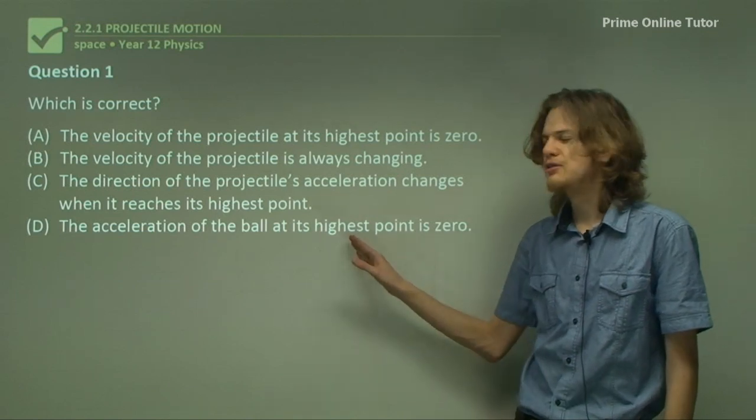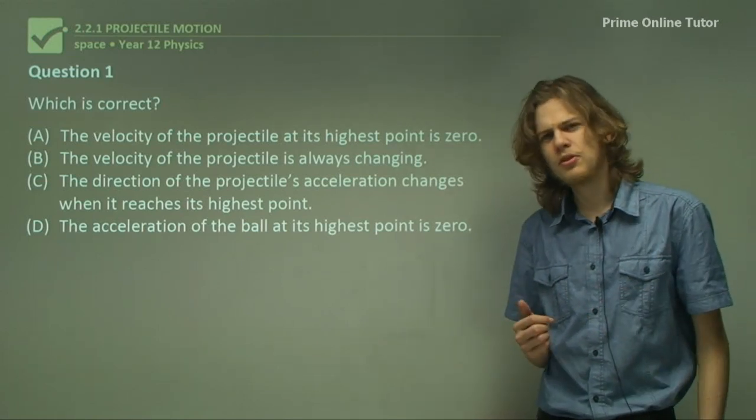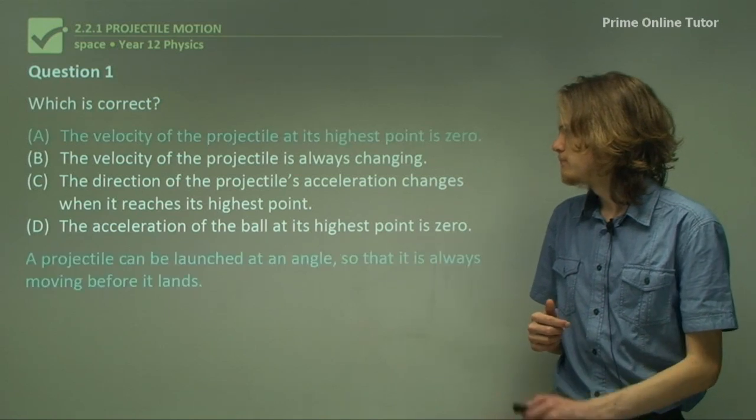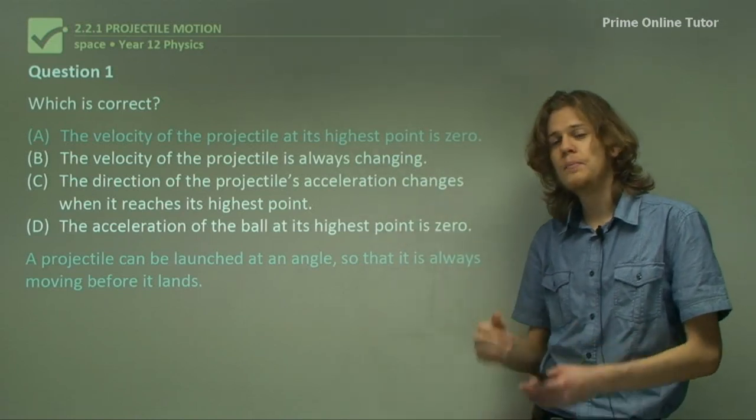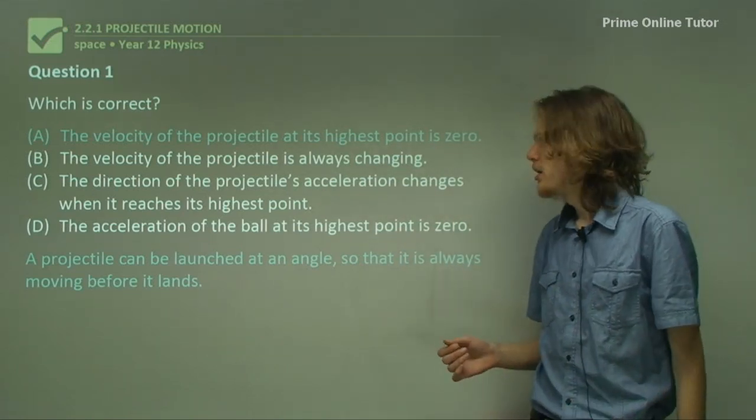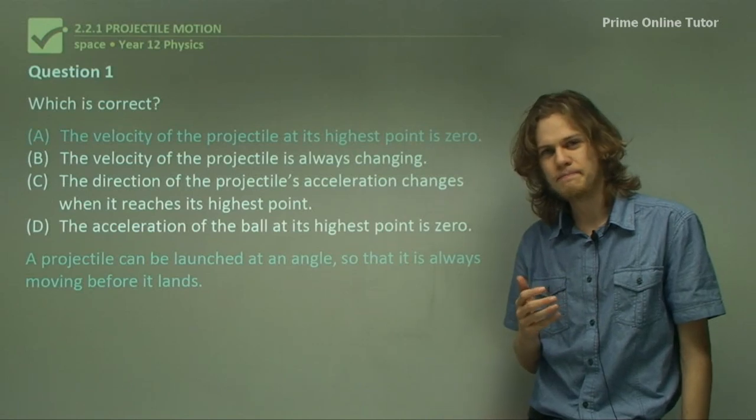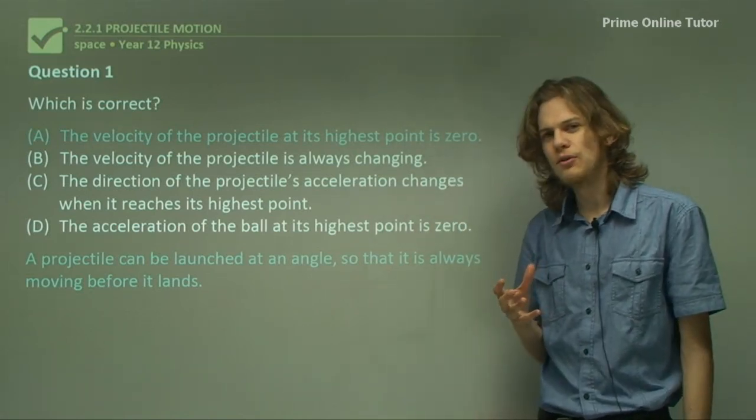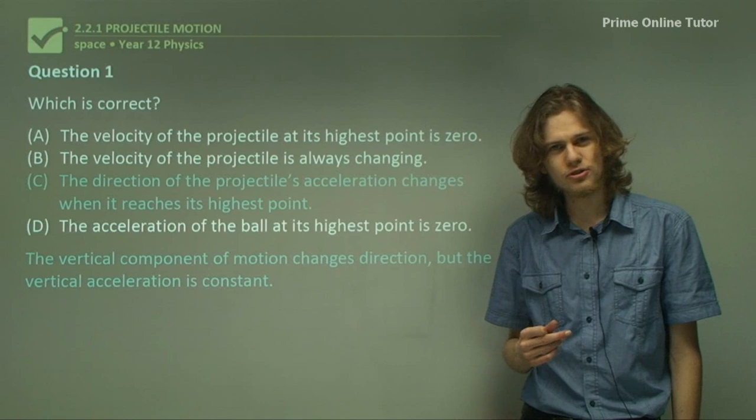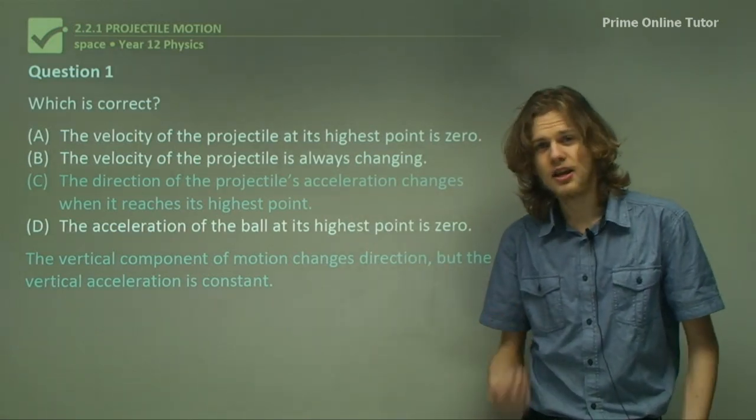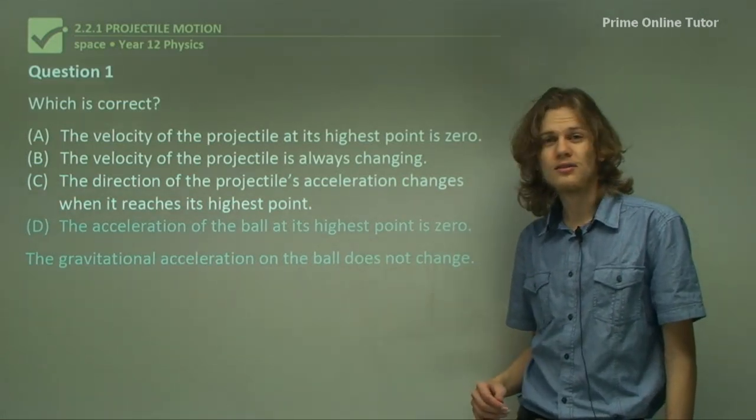Right away we can see that D is wrong because the acceleration on a projectile is going to be constant. It's going to be the force of gravity. Our correct answer is not A because the velocity of the projectile at its highest point might be 0 in one component of its motion, but if we're launched with a constant horizontal velocity, we're going to keep that constant velocity. So our velocity will never quite be 0. The direction of the projectile's acceleration does not change because gravitational acceleration is constant. The direction of its velocity changes as it stops moving up and starts moving down. The acceleration is constant, so it does not ever reach 0.